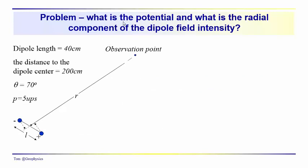We'll wrap up with a simple problem: determine the potential and the radial component of the dipole field intensity for this case. We have a dipole with L equal to 40 centimeters, R equal to 200 centimeters — not really far away, but we'll use it for the calculation. The co-latitude theta is 70 degrees, and the pole strength is five ups.